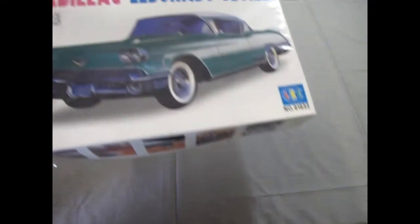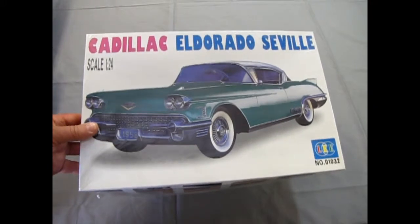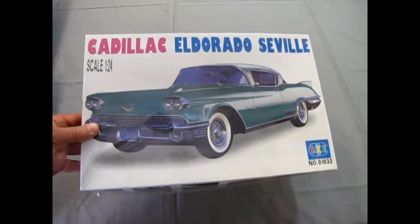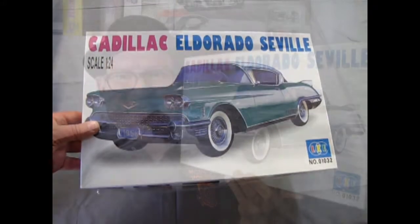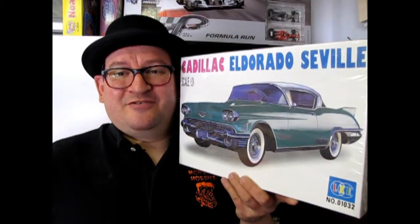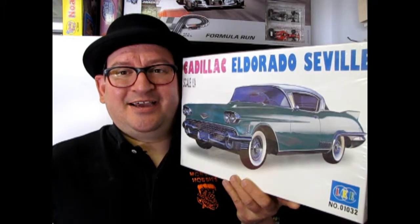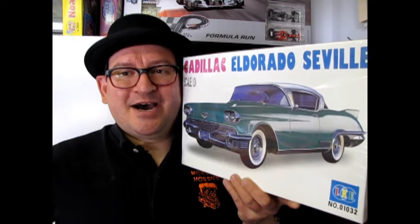So that is our examination of the 1958 Cadillac Eldorado Seville from Lee. Well, I hope you enjoyed this episode of Monster Hobbies What's in the Box, where we got to look at the 1958 Cadillac Eldorado Seville by Lee.